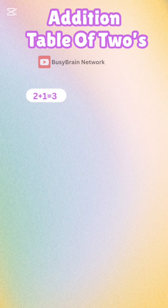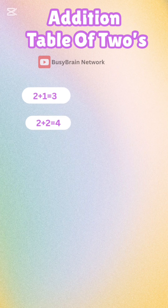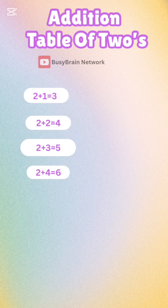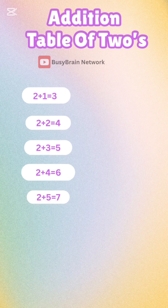2 plus 1 is equal to 3. 2 plus 2 is equal to 4. 2 plus 3 is equal to 5. 2 plus 4 is equal to 6. 2 plus 5 is equal to 7.